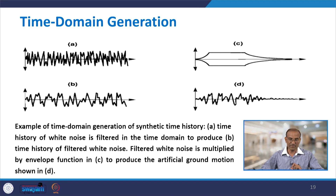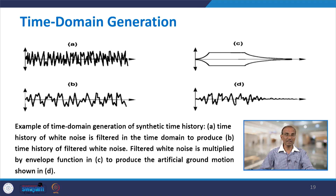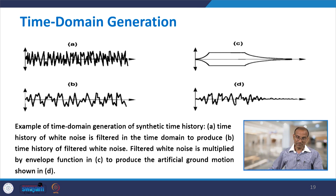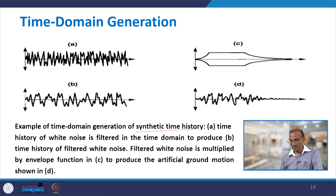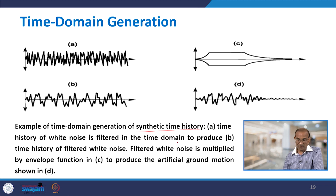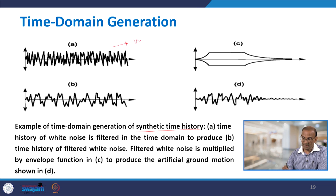An example of time domain generation of a synthetic time history is given here. In figure A, the time history of white noise is shown. In figure B, this white noise is filtered in the time domain to produce the filtered white noise time history. These terms — synthetic time history and artificial time history — refer to the same thing.